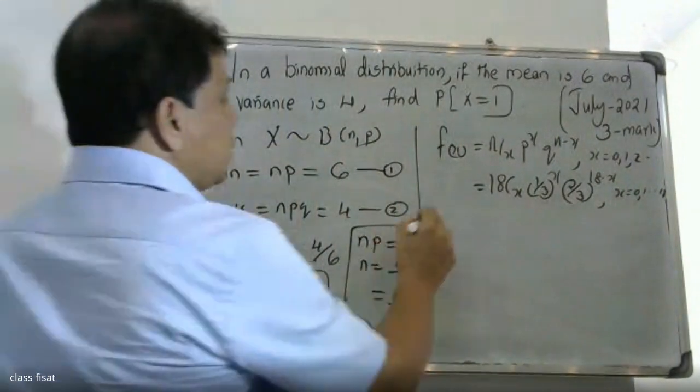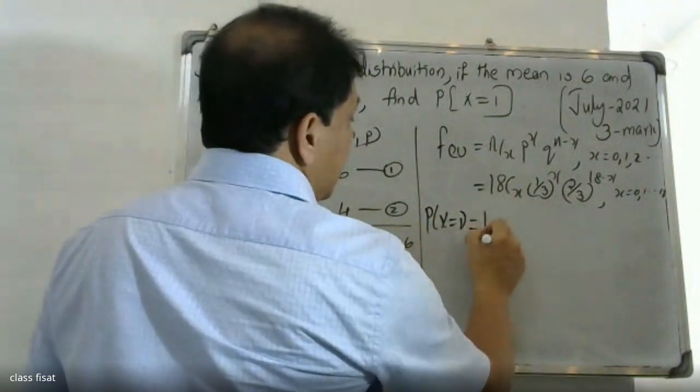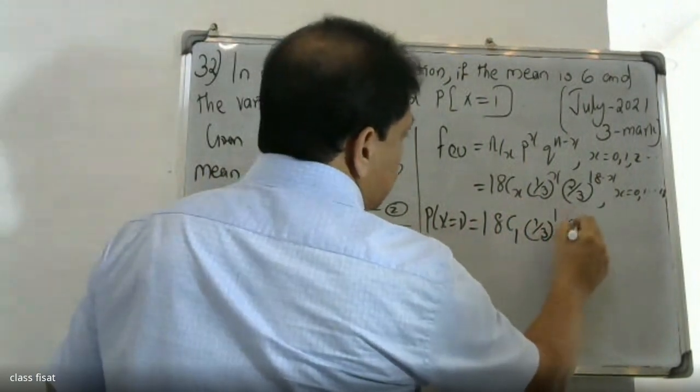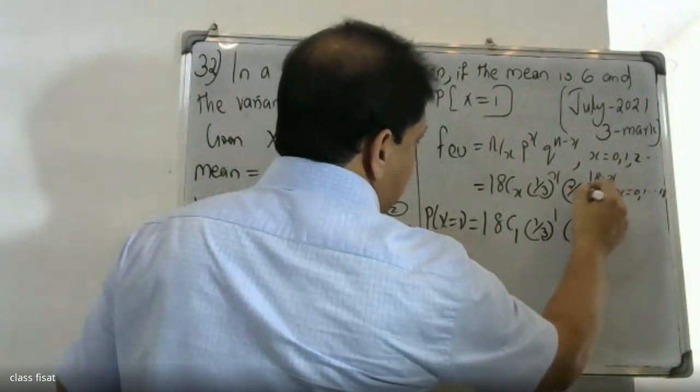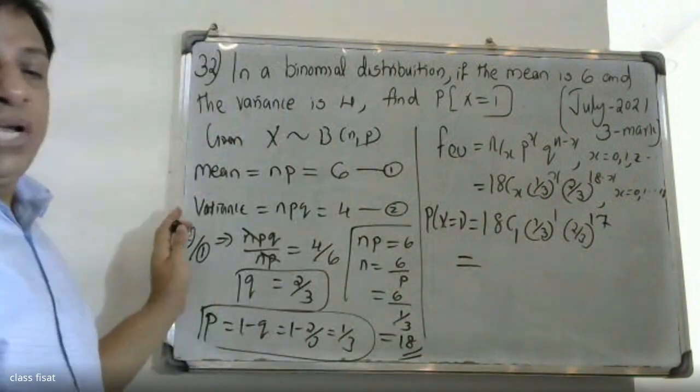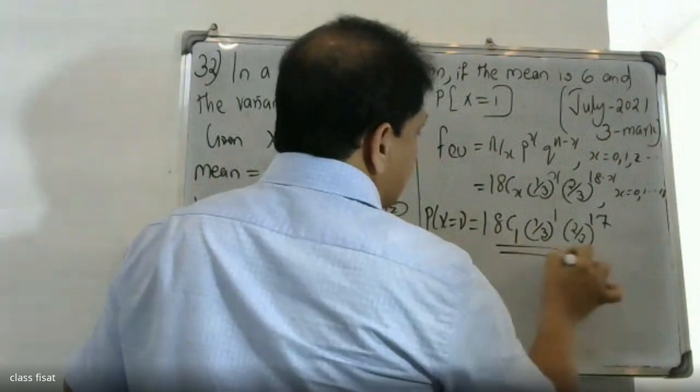The probability of X = 1 is P(X=1) = 18C1 × (1/3)^1 × (2/3)^17 = 18 × (1/3) × (2/3)^17, which can be evaluated using a calculator.